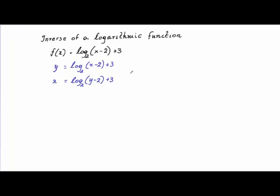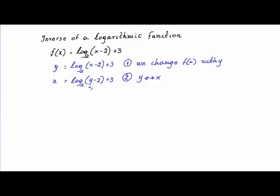The next step is that we want to solve this function for y. Step one: we change f(x) to y. Step two: interchange the y and the x. Step three: isolate the y. Since y is in the argument of the logarithm, the first thing is to move the constant 3 to the left side of the equation. So now we have x minus 3 equals log base 2 of (y minus 2).